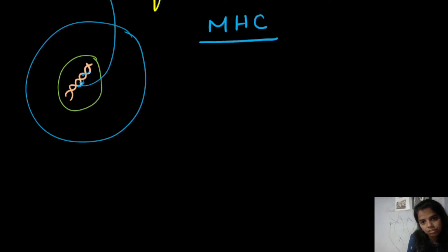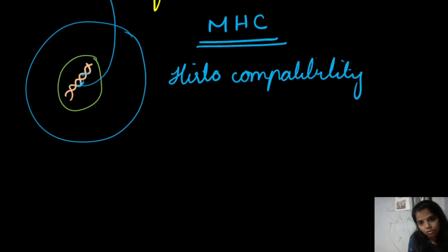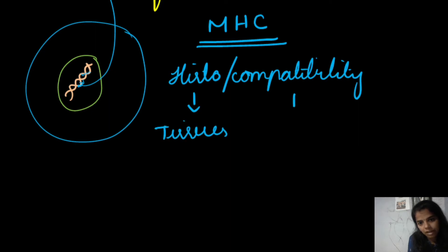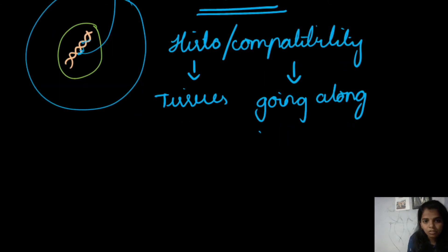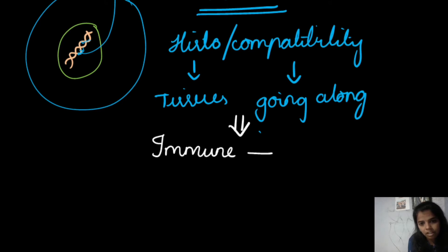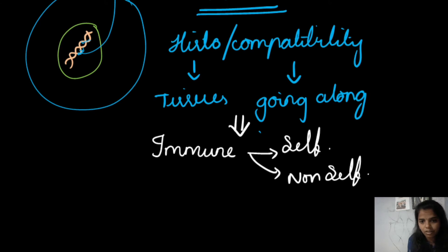Let us decode the name MHC so we can identify its function directly. There is the word 'histocompatibility' — 'histo' means tissues and 'compatibility' means how well they are going along with each other. Our MHC helps our immune system identify whether tissues belong to our own self or from any foreign substances — such as any organism, transplant, or graft.